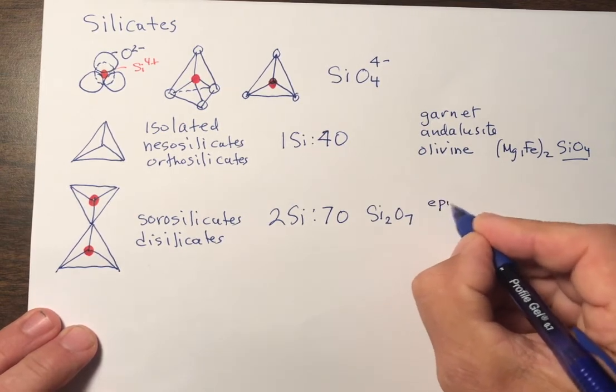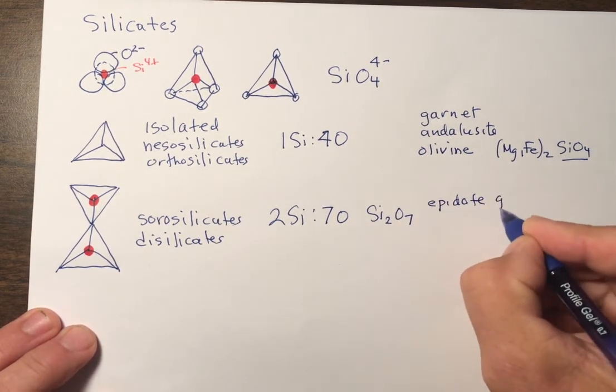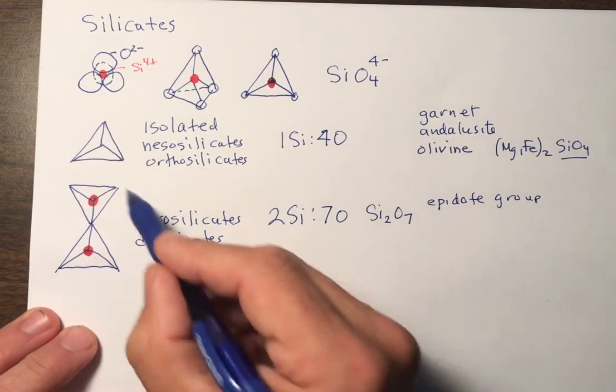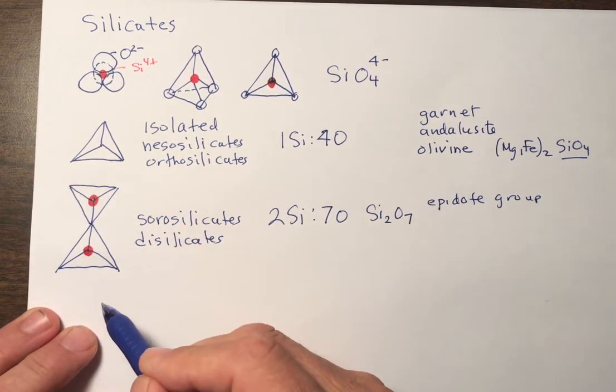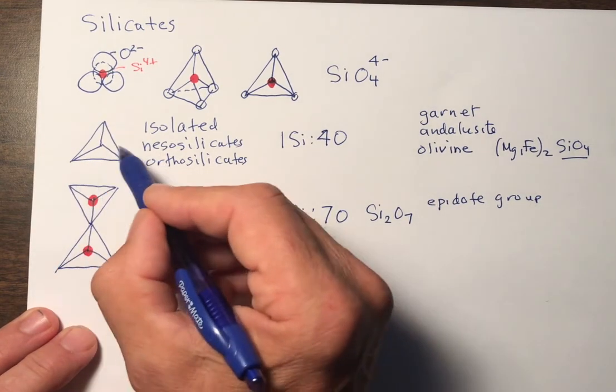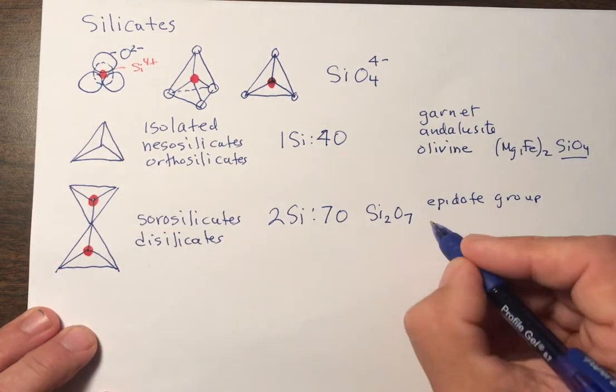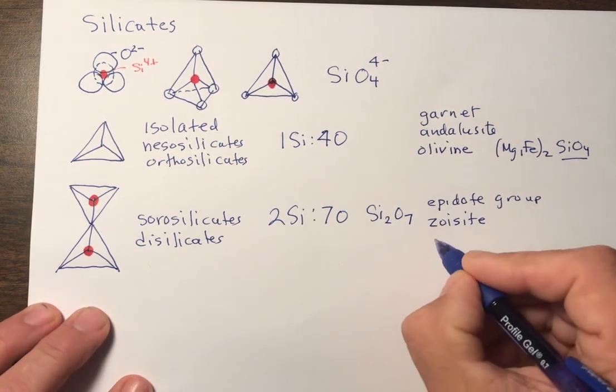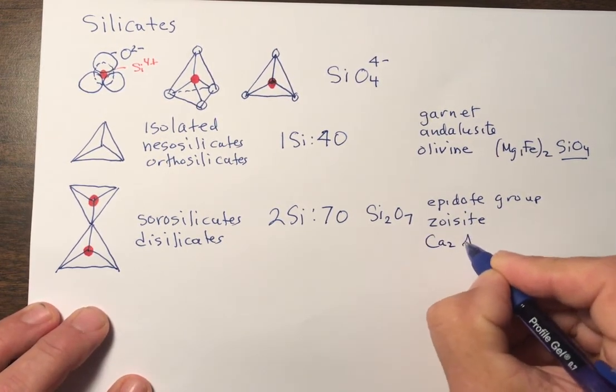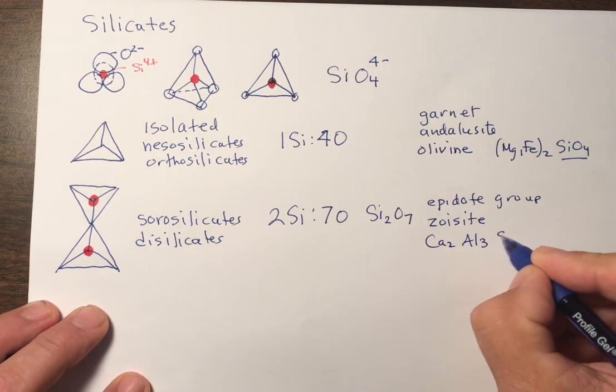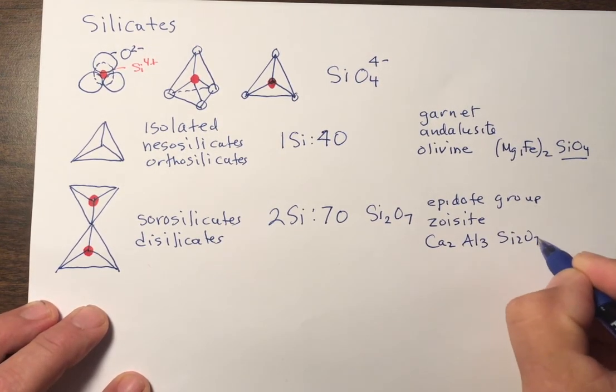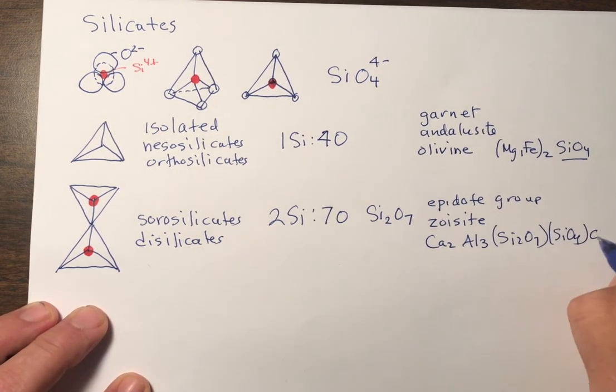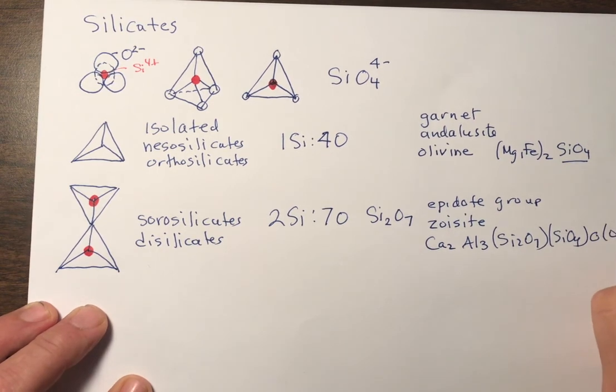And not too many members of the sorosilicate group, but they include the important epidote group. And that is an interesting set of minerals. They include both the disilicate structures and isolated silica tetrahedra. For example, zoisite or clinozoisite has the formula as follows: Ca2Al3Si2O7SiO4(OH), that's the disilicate group, SiO4, OOH, like that.